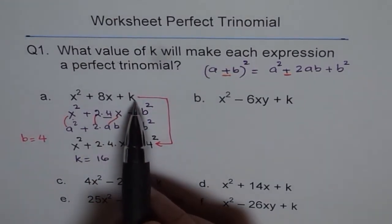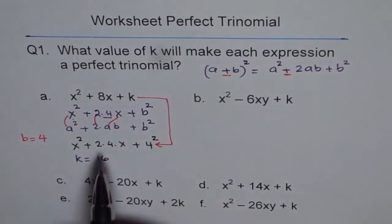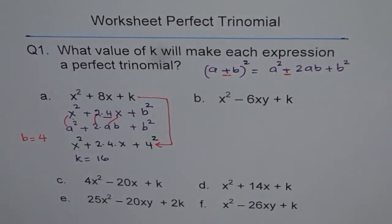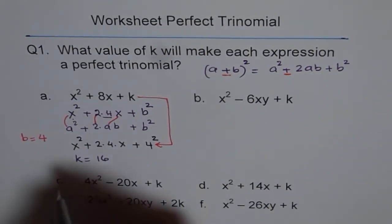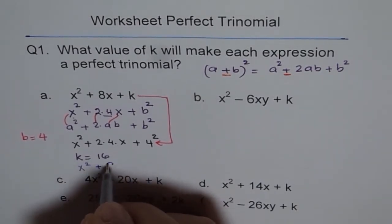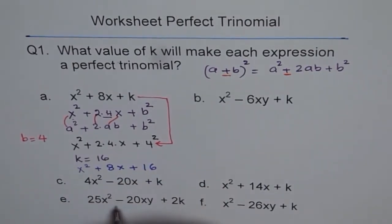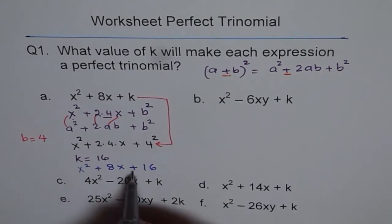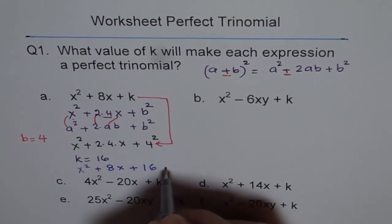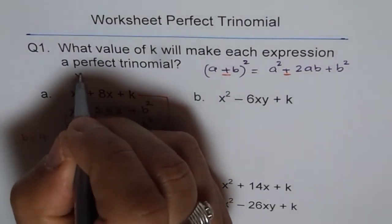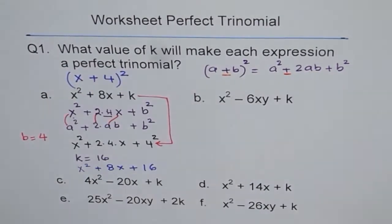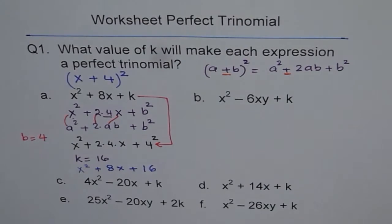Rewriting the equation with k = 16 gives x² + 8x + 16. If you factor this, you get (x + 4)². So this becomes a perfect trinomial when k = 16. I hope you understand the method.